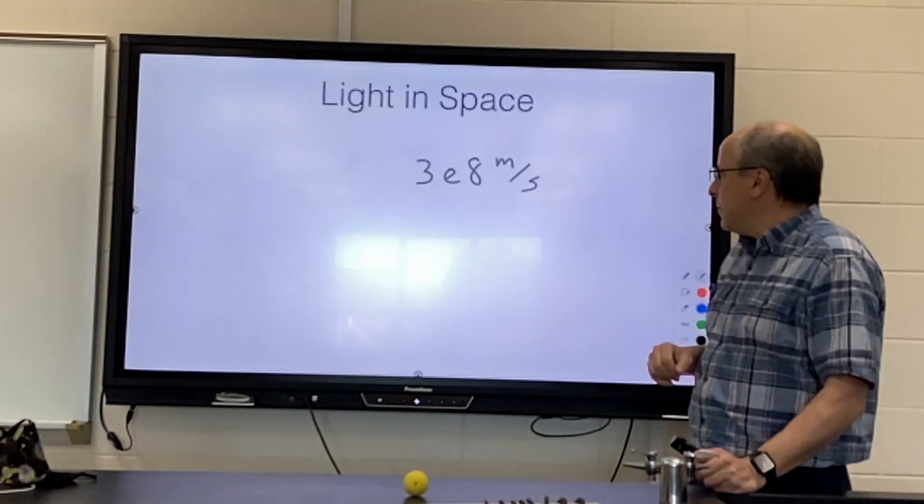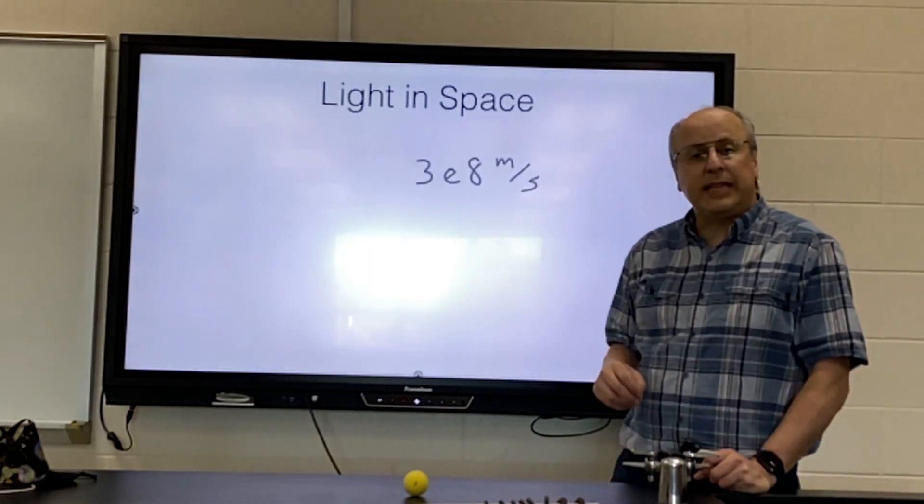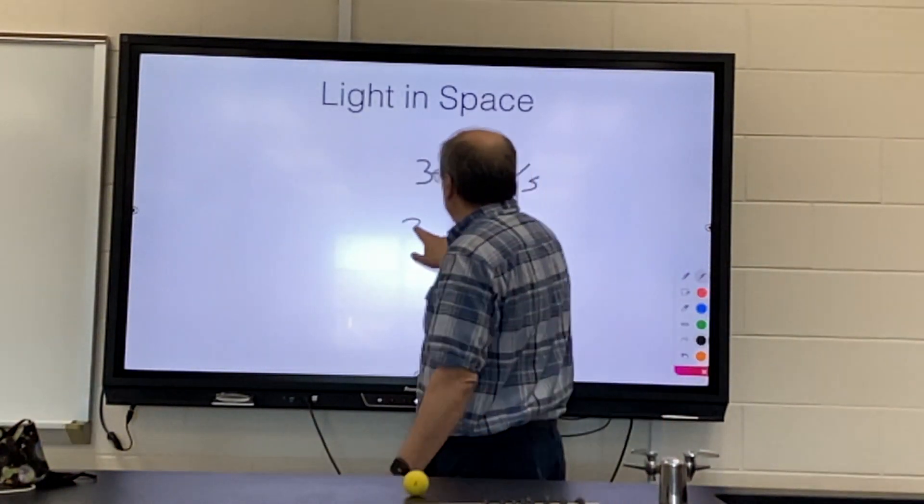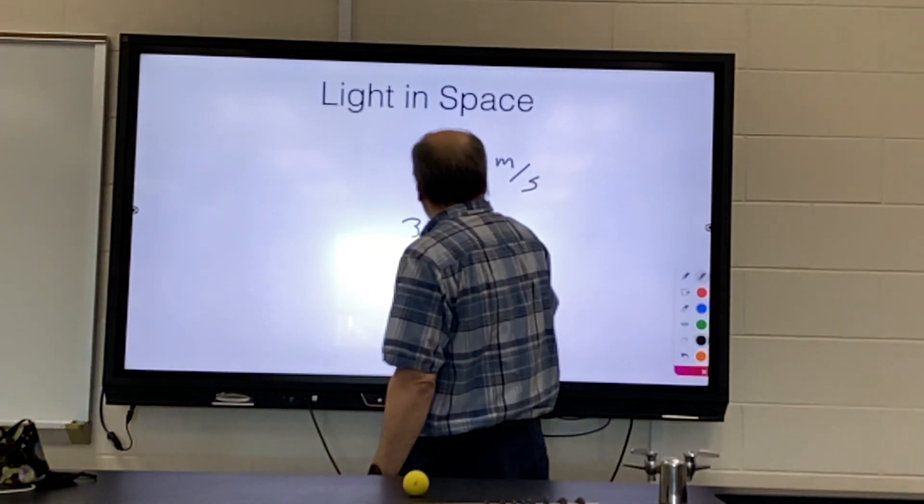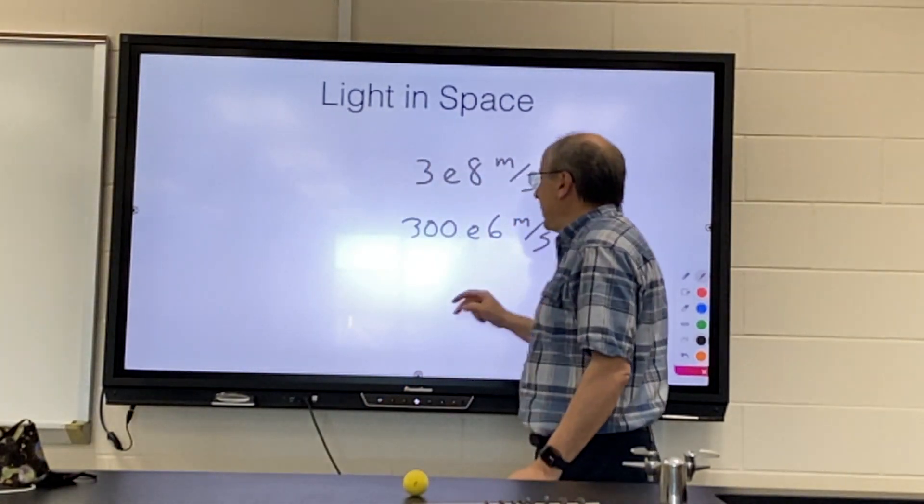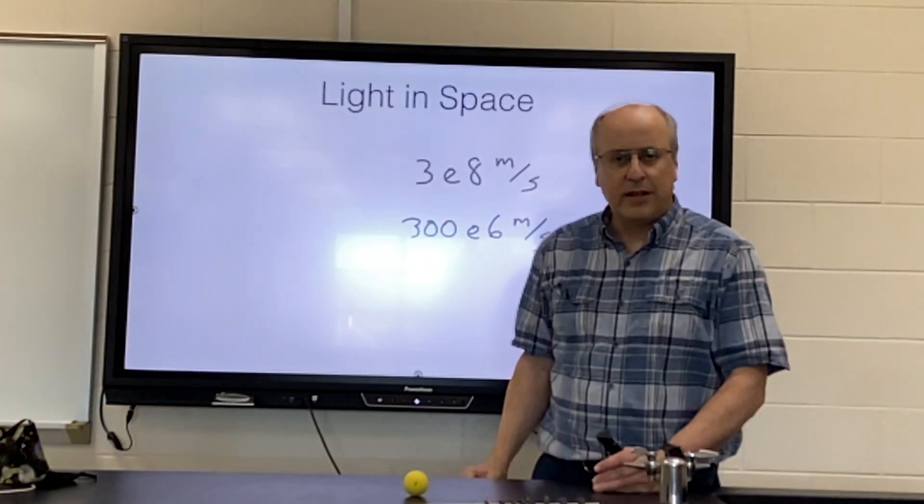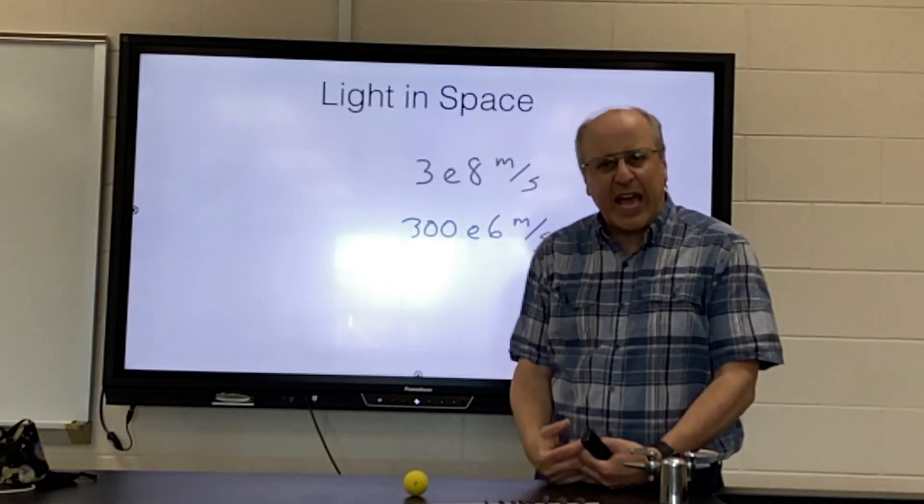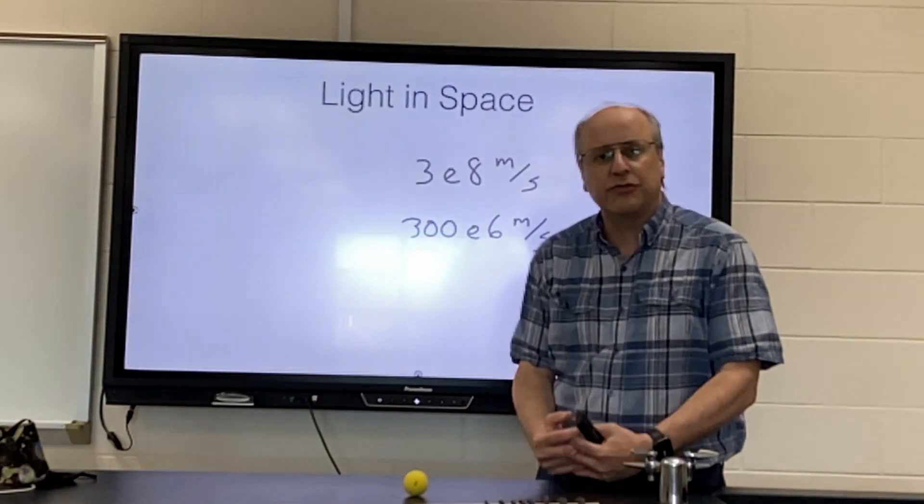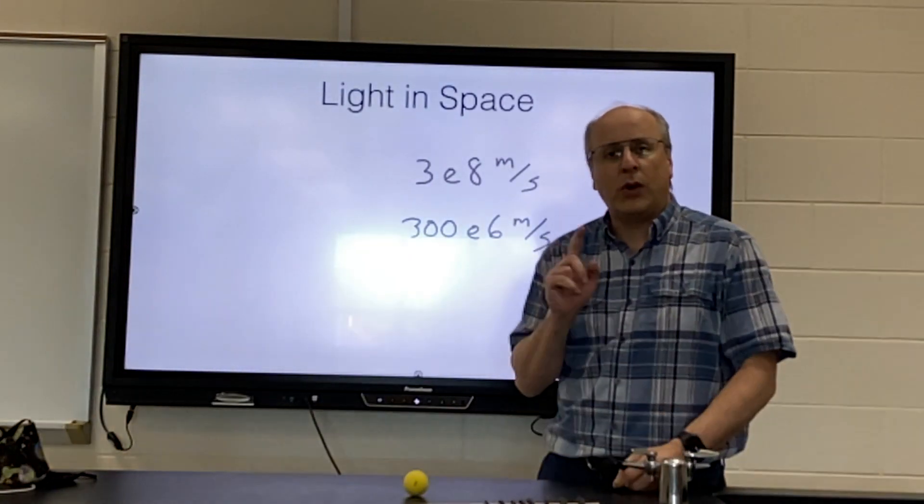The speed of light through outer space is 3 × 10^8. We can rewrite that 300 × 10^6, and that is 300 million meters per second. So the speed of light, fastest speed, 300 million meters in one second.